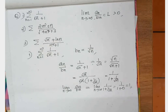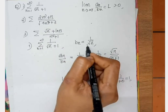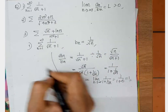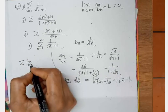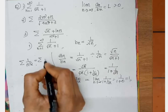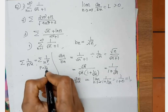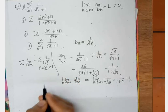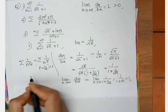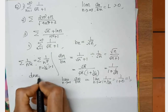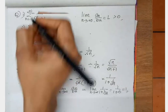So sigma aₙ and sigma bₙ converge or diverge together. We notice that bₙ is sigma 1 by n^(1/2), which is of the form 1 by n^p. Here p equals 1/2, which is not strictly greater than 1, so the series diverges. By using the limit comparison test, our first problem diverges.